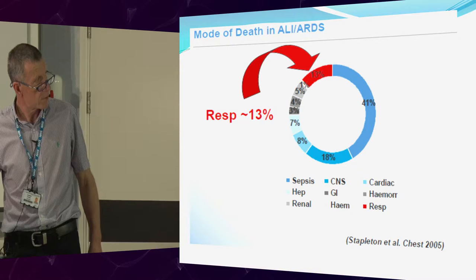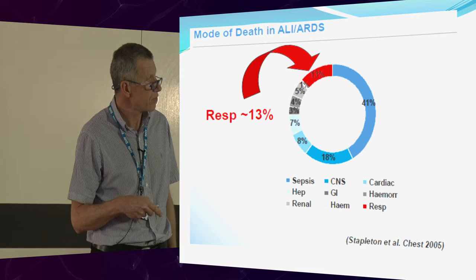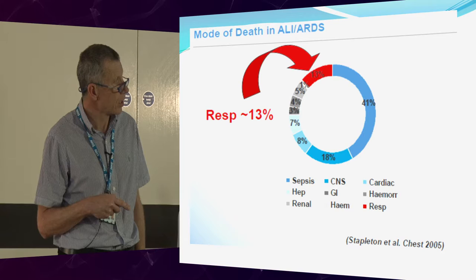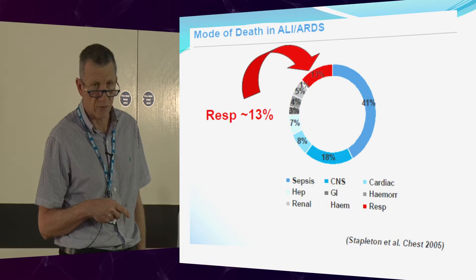Don't forget that the main mode of death in ARDS is usually multi-organ failure, but a significant number of people can die of hypoxia. Obviously sorting out the hypoxia not only prevents those deaths but can lead to a lot of improvements in the multi-organ failure problem as well.